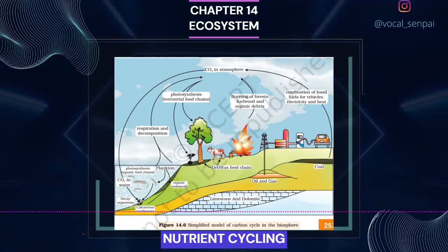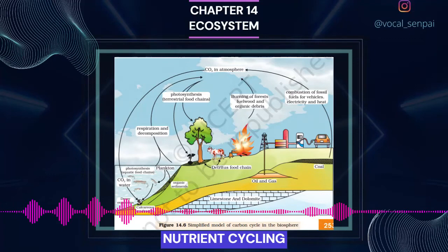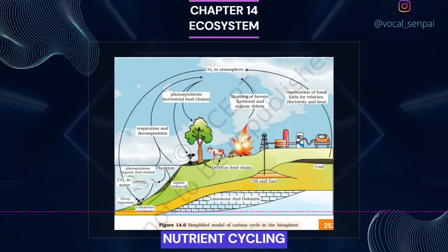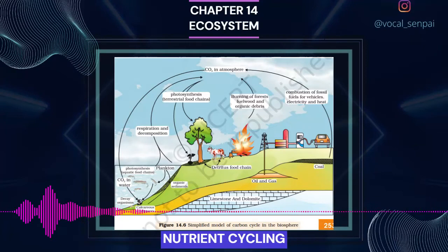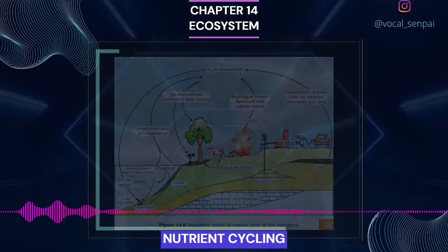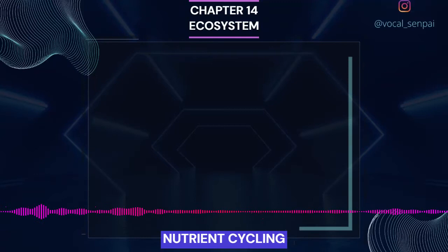Environmental factors such as soil, moisture, pH, temperature, etc. regulate the rate of release of nutrients into the atmosphere. The function of the reservoir is to meet with the deficit which occurs due to imbalance in the rate of influx and efflux. You have made a detailed study of the nitrogen cycle in class 11. Here we discuss carbon and phosphorus cycles.